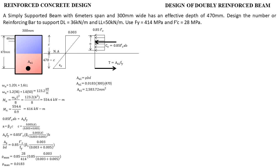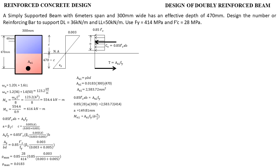To compute the strength MN produced by the singly reinforced beam, we need the value of A. Using the equilibrium equations with As1 and Fy, the only unknown is A, which gives us A = 149.81 mm. The nominal moment MN1 = As1 · Fy · (d − A/2), and substituting the values gives MN1 = 422.61 kN·m. We notice this is below our required nominal strength of 616 kN·m.